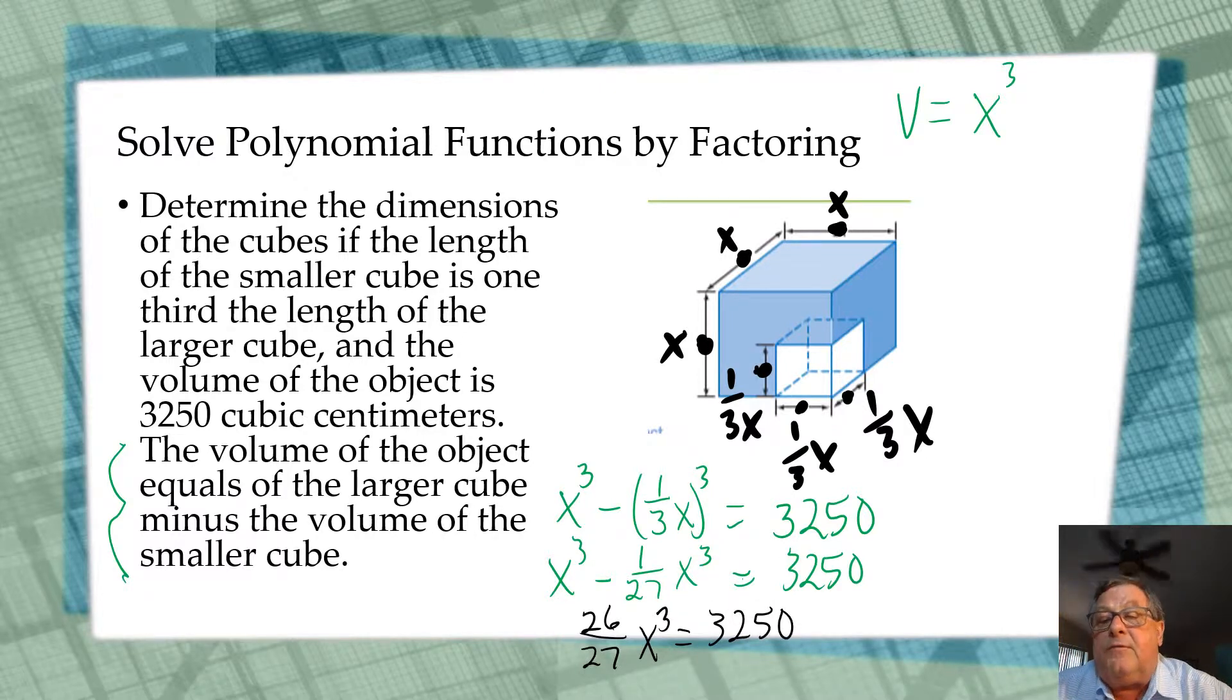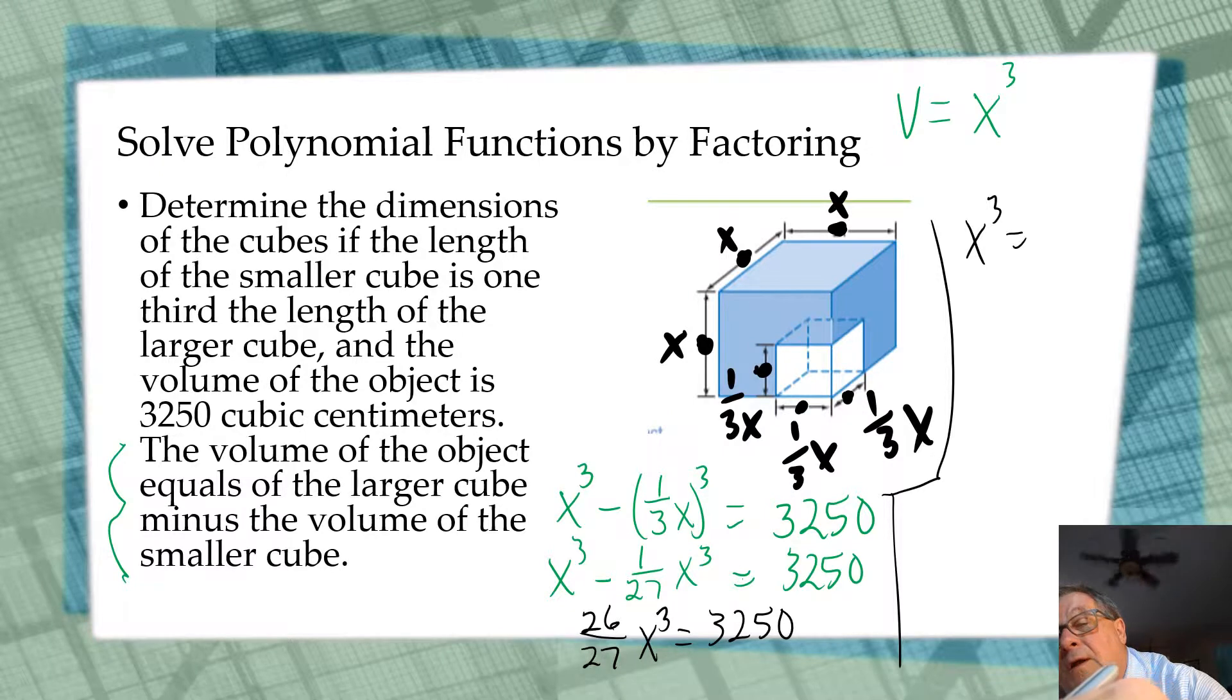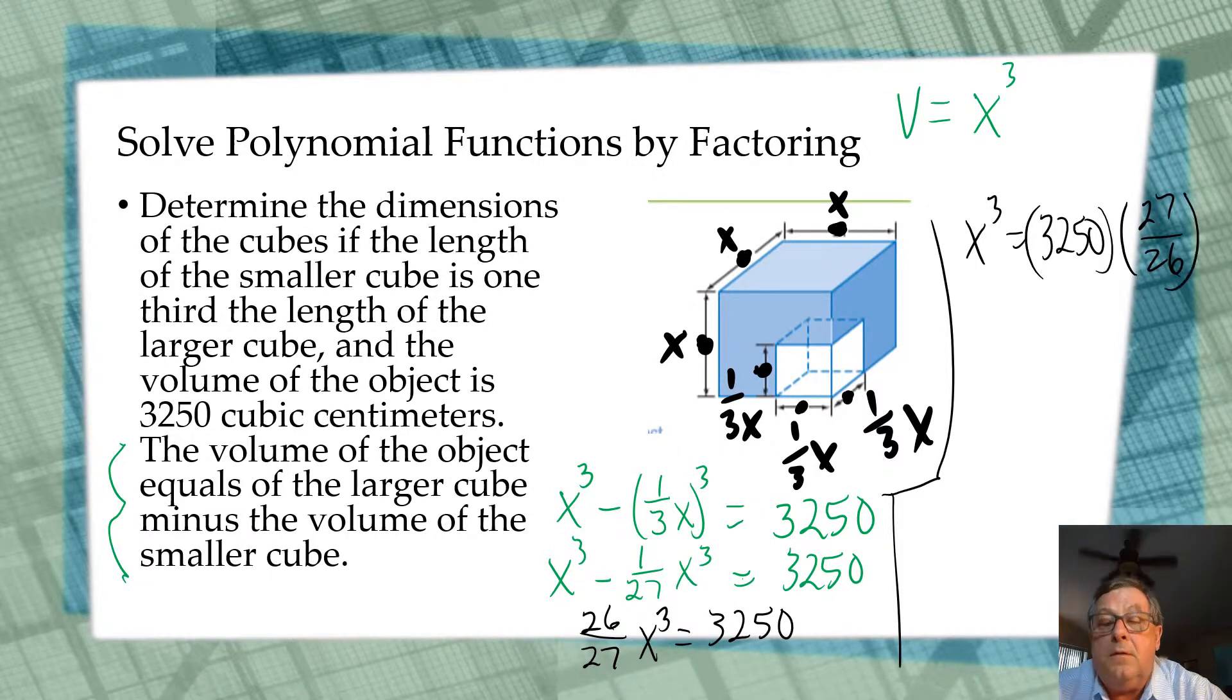Then let's divide it. That's the same as x cubed equals 3,250 times 27 over 26. If I'm dividing by 26 over 27, that's the same as multiplying by 27 over 26.